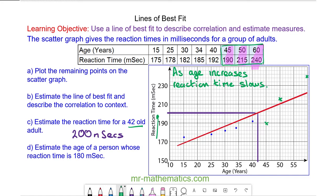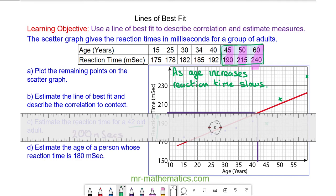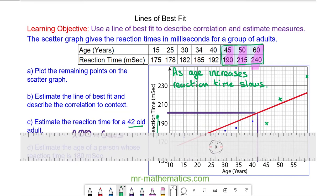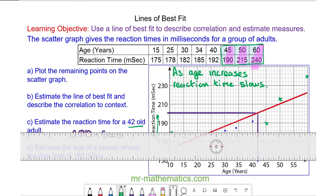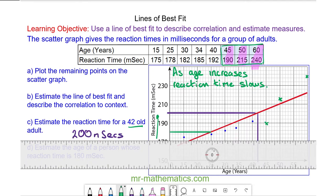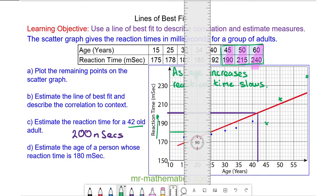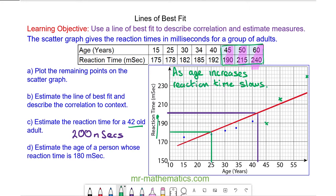We can estimate the age of a person whose reaction time is 180 milliseconds. This time we draw a horizontal line at 180, then we go down from our graph to the x-axis, and you can see that it is likely to be a 25 year old.